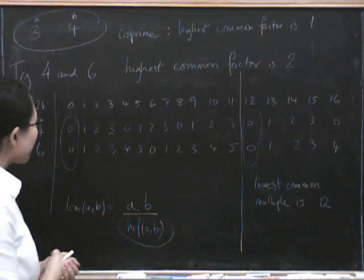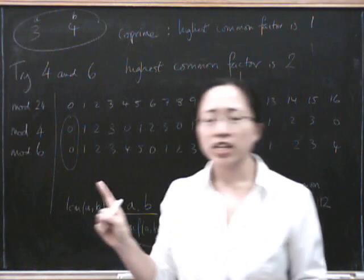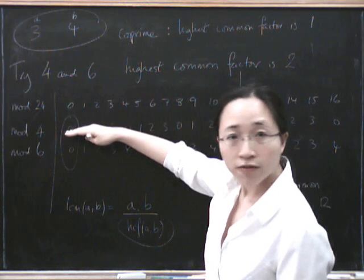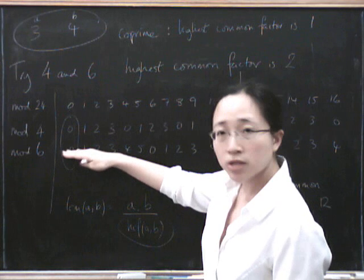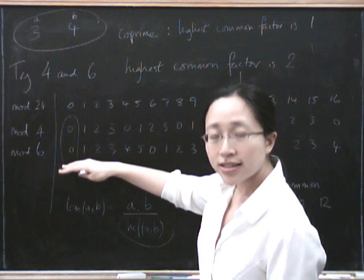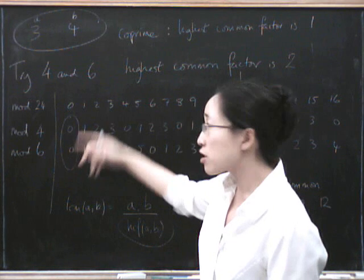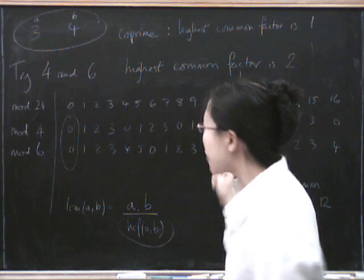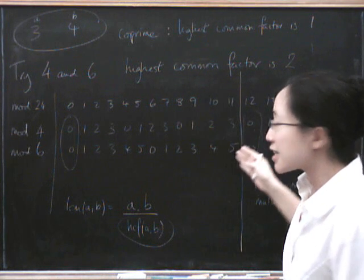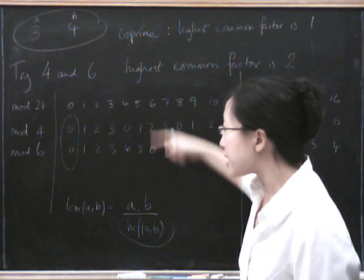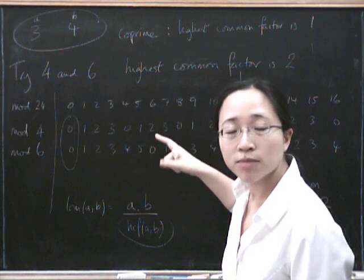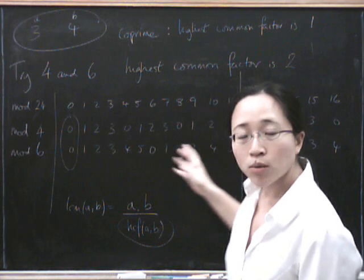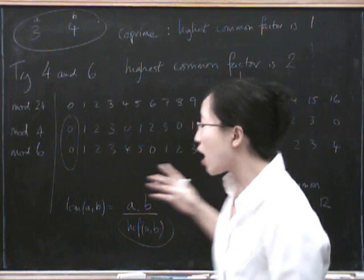So you might say to yourself, but wait, there's something funny going on here, because if I've got four possible numbers that I can be mod 4, and I've got six possible numbers that I can be mod 6, doesn't that mean that there are 24 possible combinations of numbers? So why does the pattern start repeating itself after 12? Well, if you have a look at these pairs, you'll see that some pairs of numbers can't ever possibly happen. So only 12 of the numbers are actually possible, whereas the other 12 of them aren't possible.